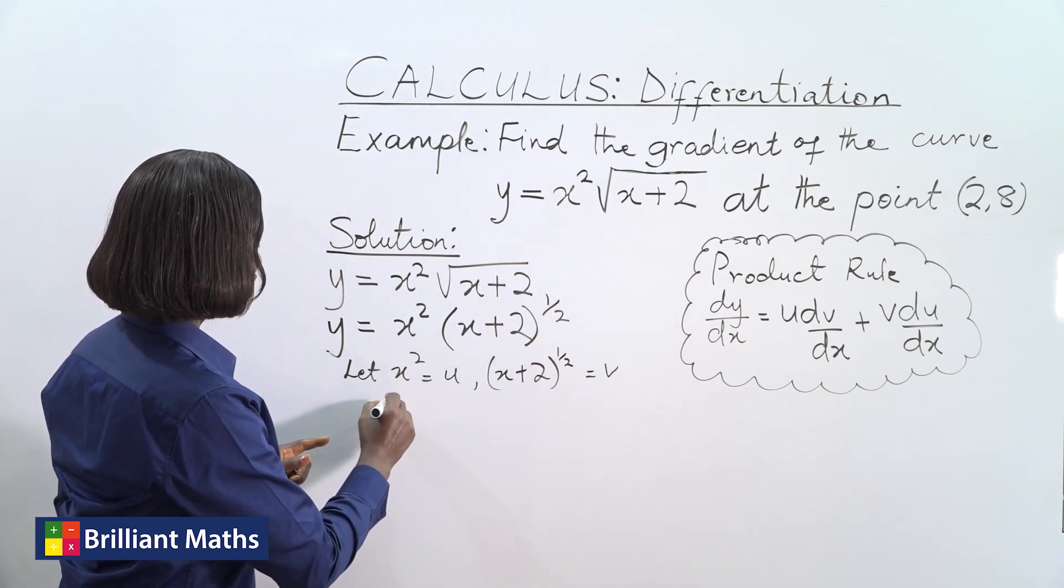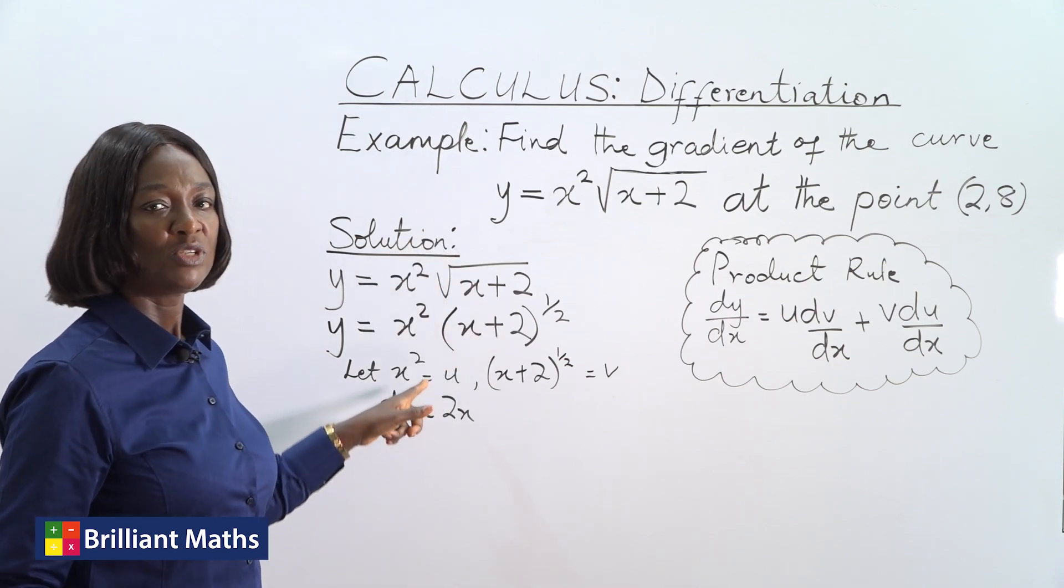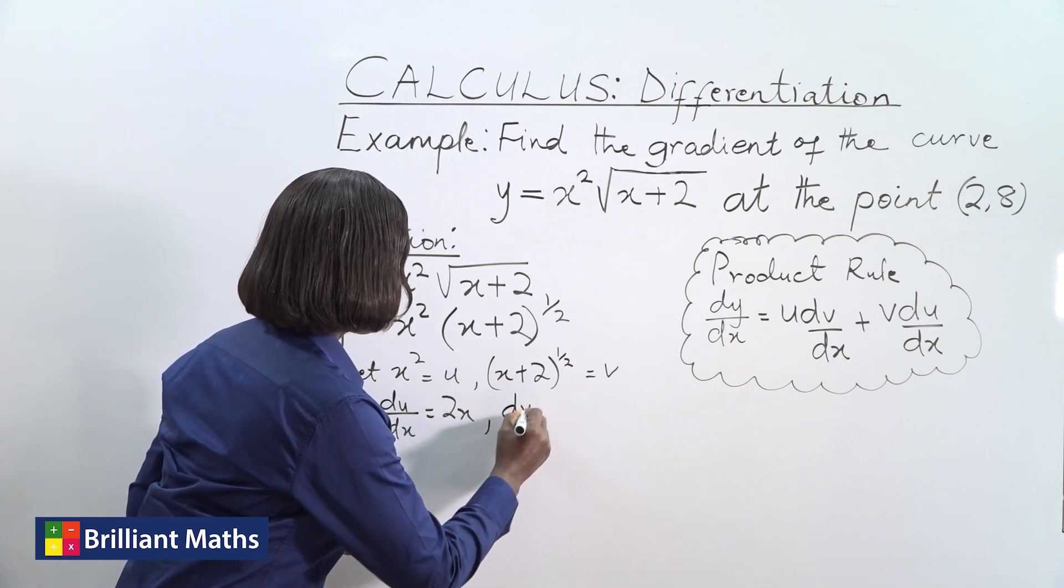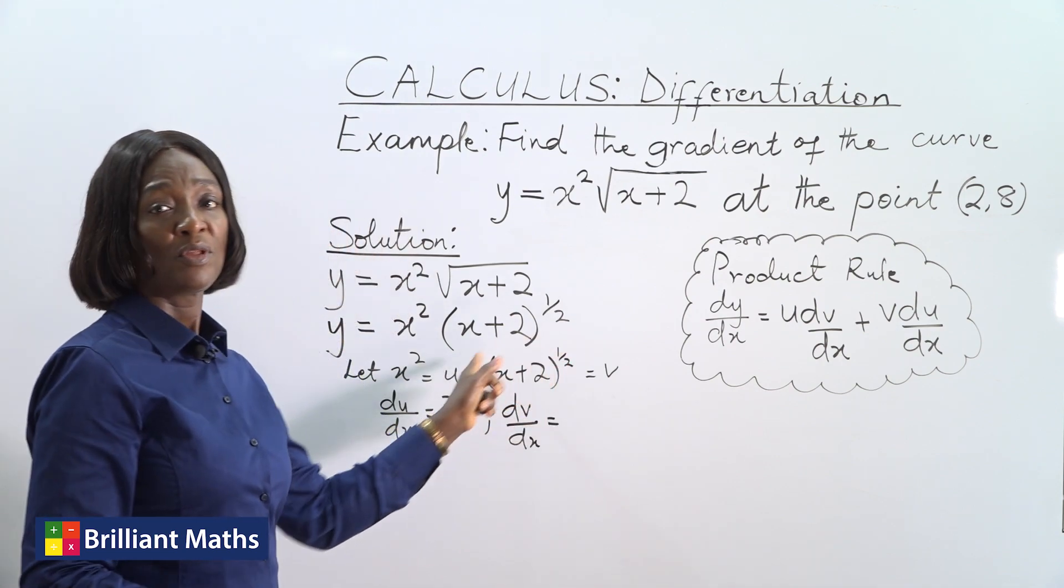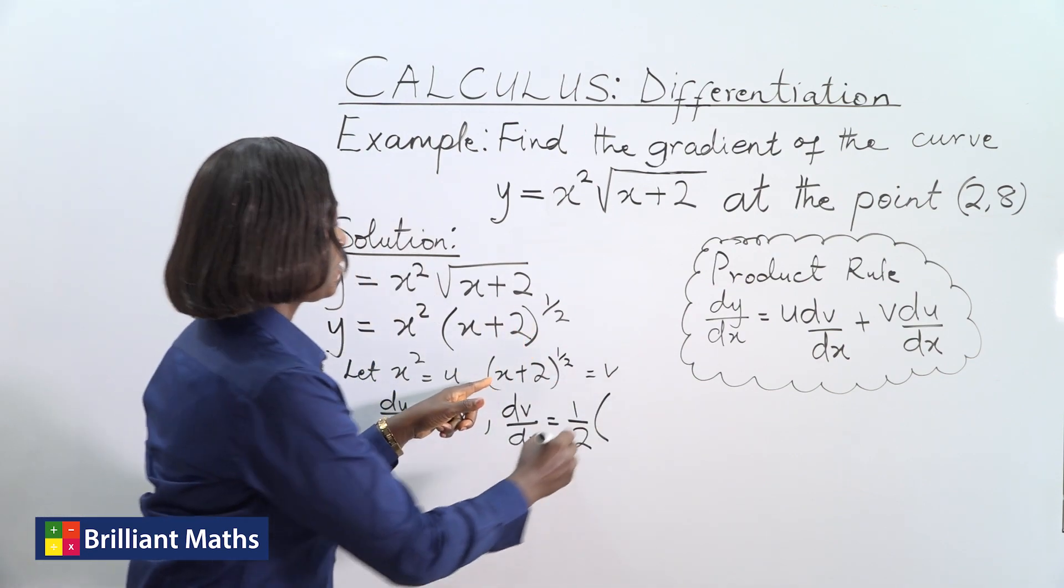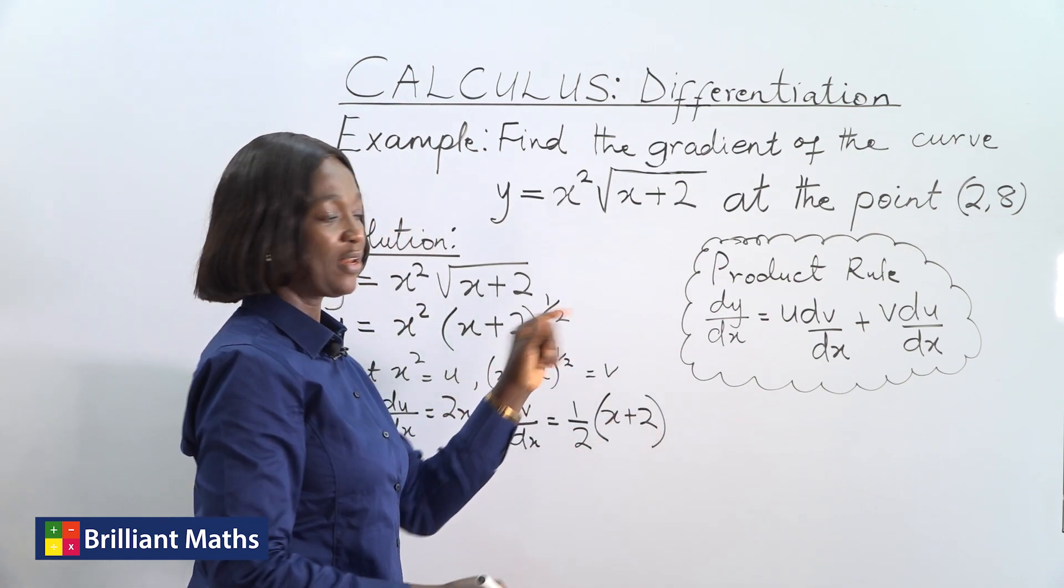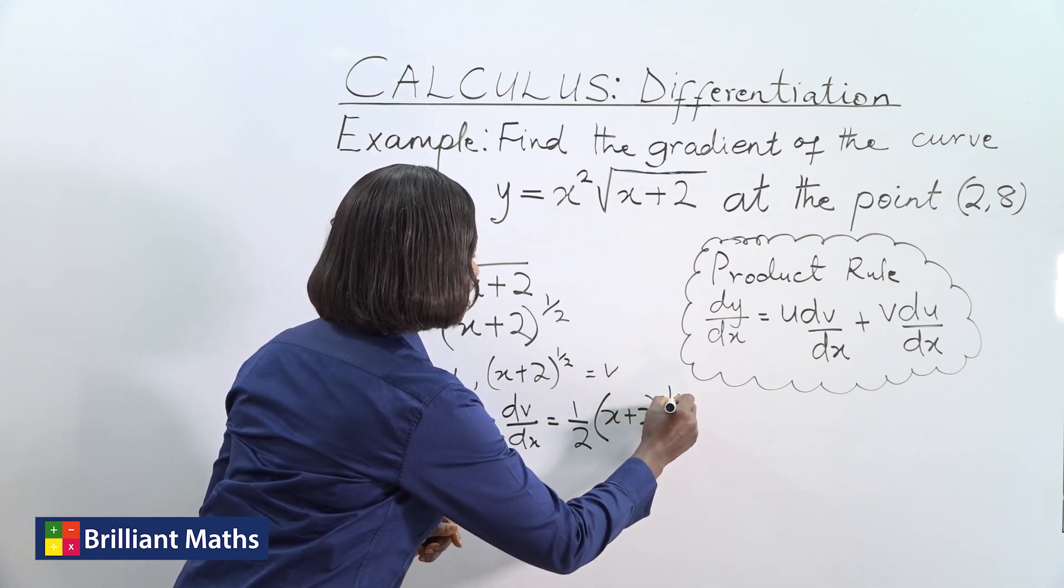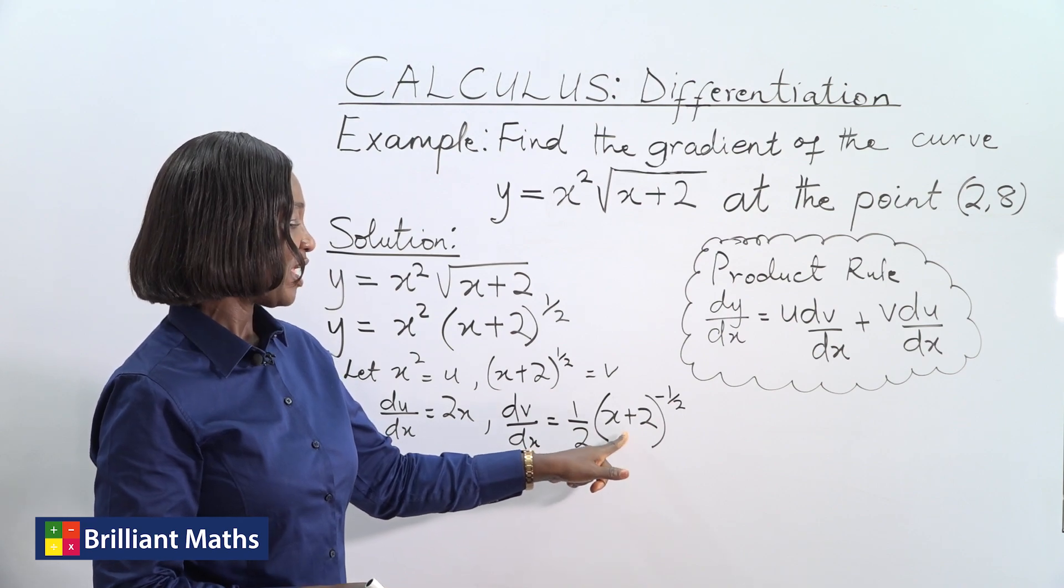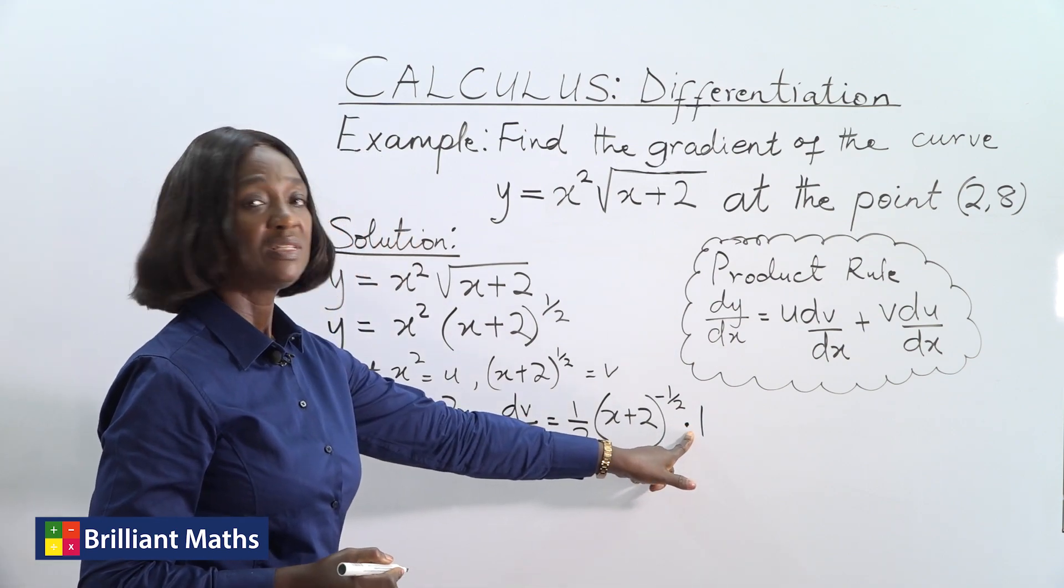So du/dx is equal to 2x, we just differentiate x squared. And then dv/dx will be, we're using the chain rule here, half times x plus 2 power half minus 1, which becomes power minus half. And then we differentiate the function inside, and the derivative of x is 1.